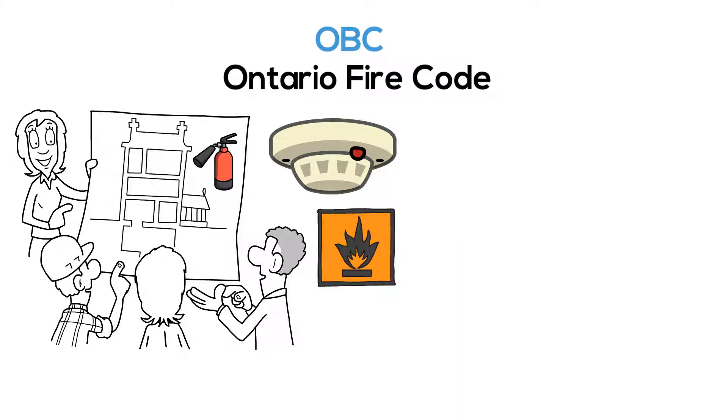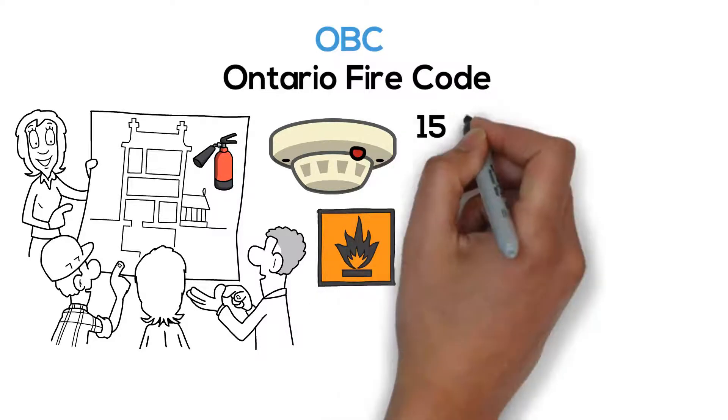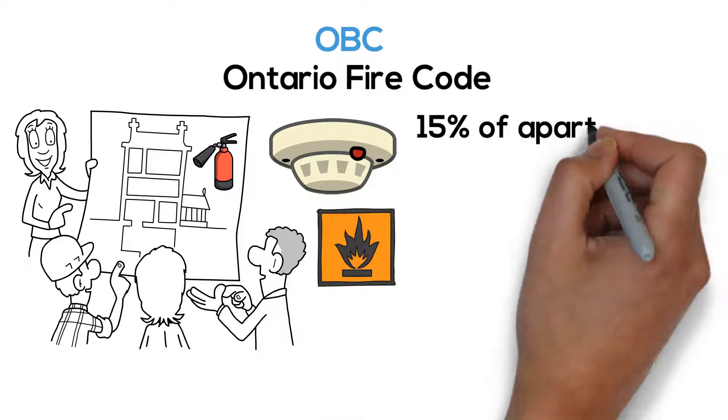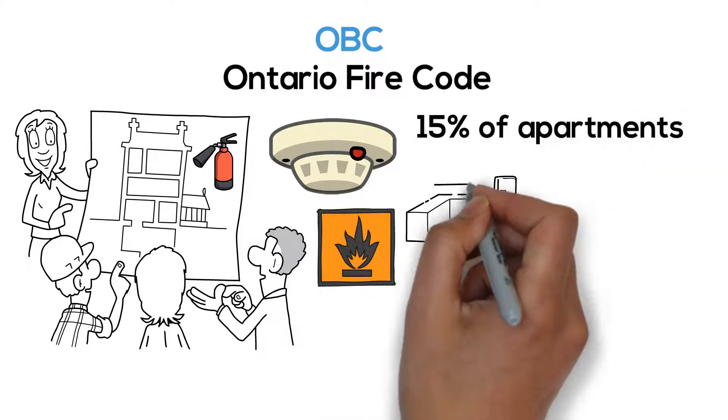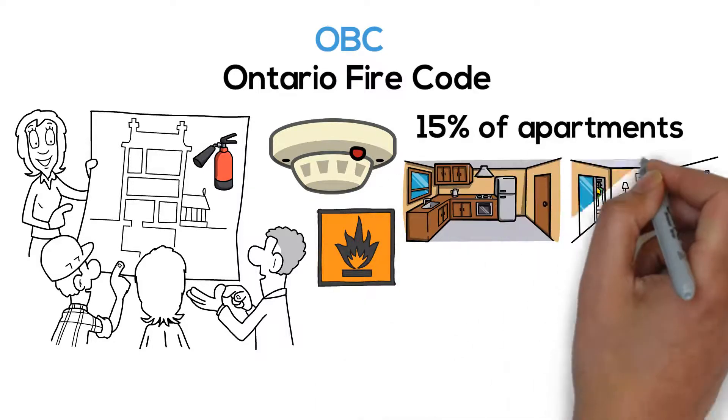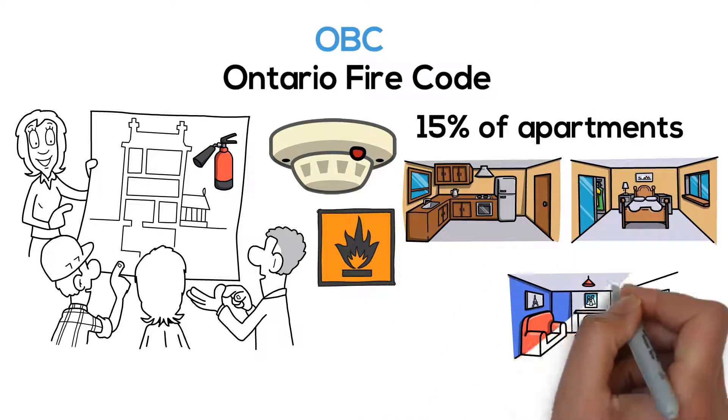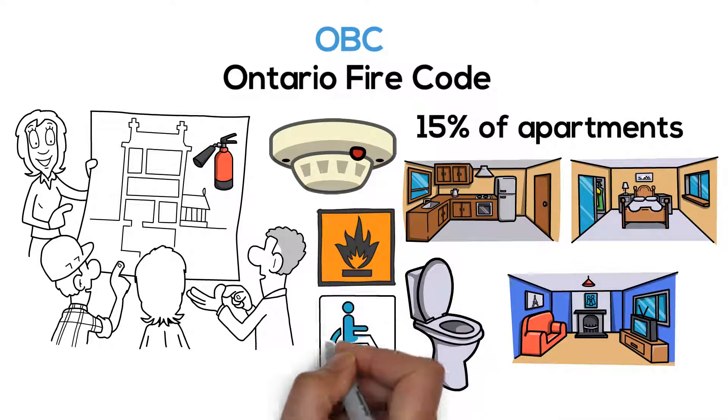The code dictates that 15% of apartments need to have barrier-free access to the kitchen, bedroom, living room, and bathroom.